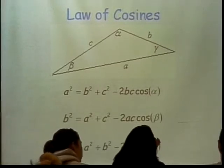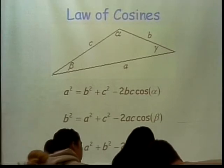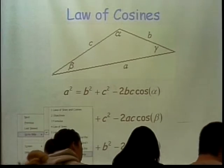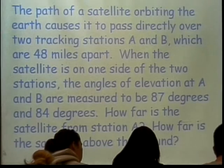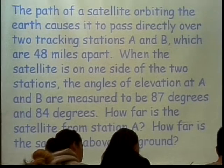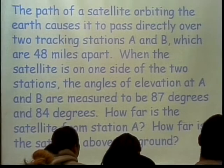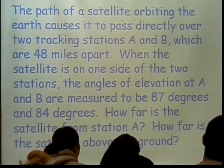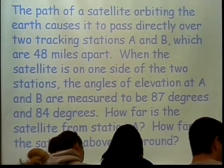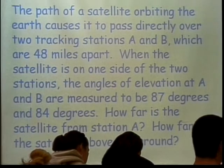Let's now go to the next slide. The path of the satellite orbiting the Earth causes it to pass directly over two tracking stations A and B, that are 48 miles apart. When the satellite is on one side of the two stations, the angle of elevation at A and B are measured to be 87 degrees and 84 degrees. How far is the satellite above the ground?